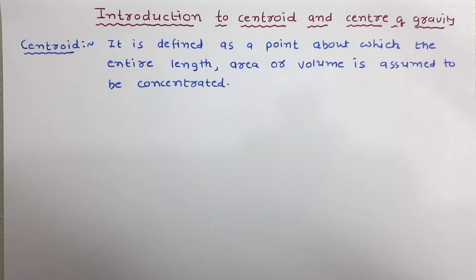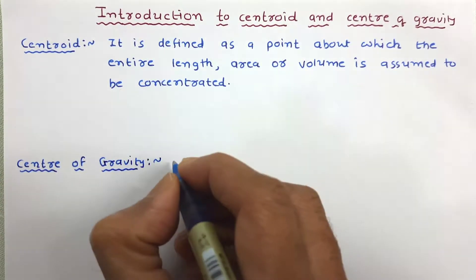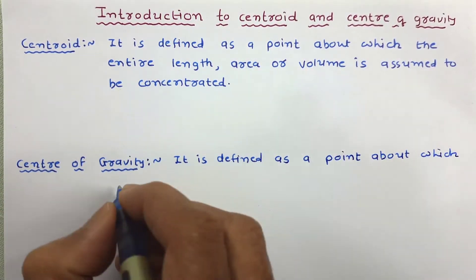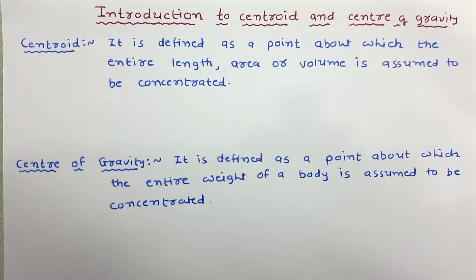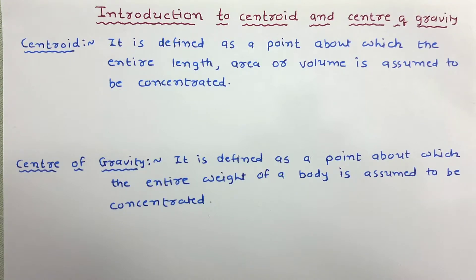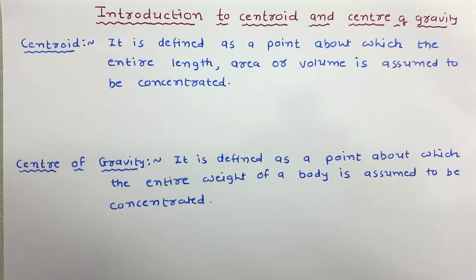Now let us define center of gravity. Center of gravity is defined as a point about which the entire weight of a body is assumed to be concentrated. Center of gravity is a point in a solid body which contains the weight. The point where the entire weight of a body is assumed to be concentrated is called the center of gravity.